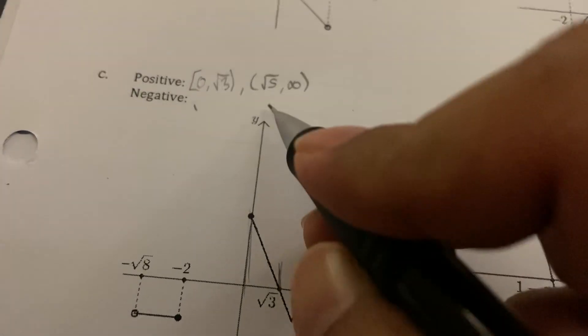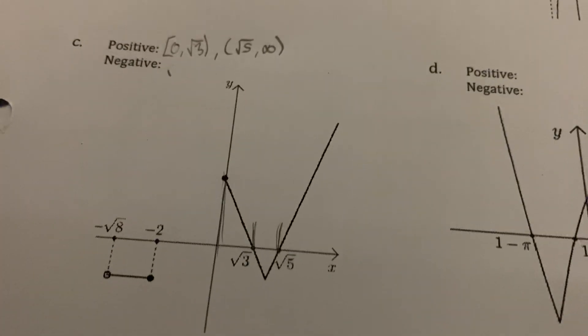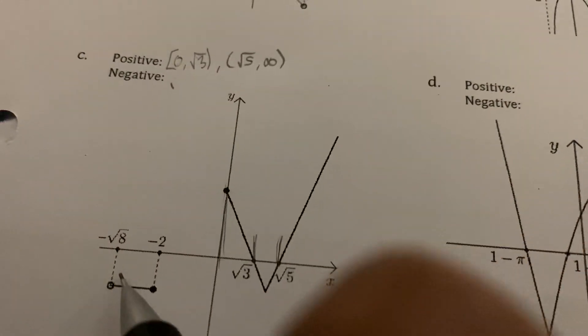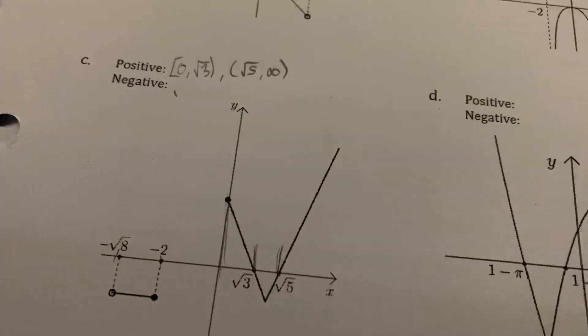And again, since this is zero, the y value here is zero, then we don't include square root of five. Then negative, so that would be from here to here, so from negative square root of eight to negative two.